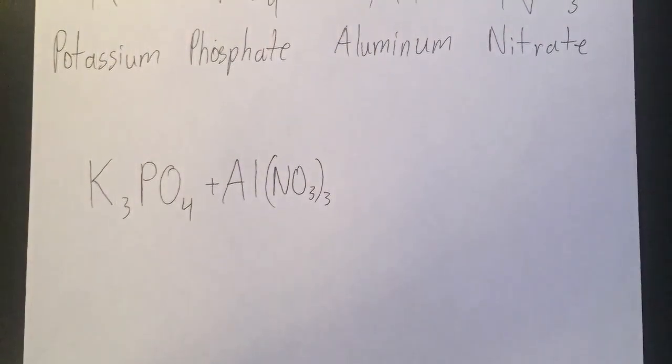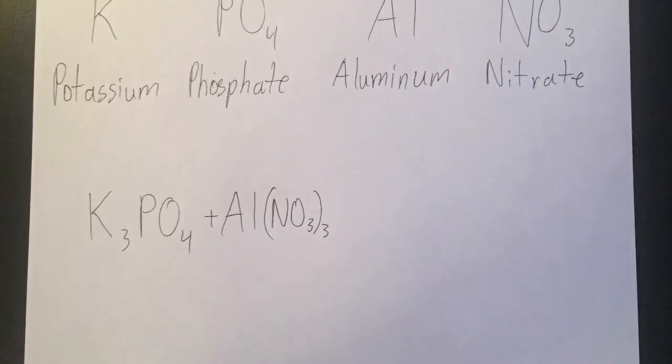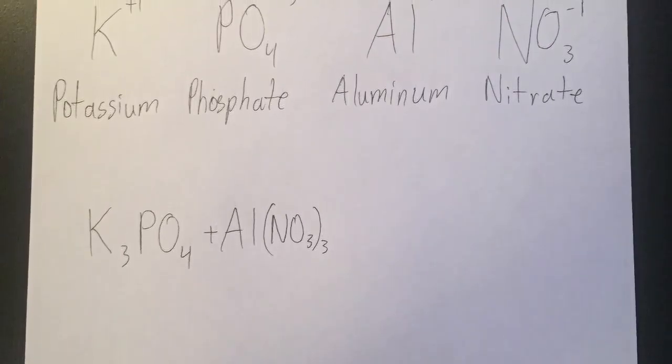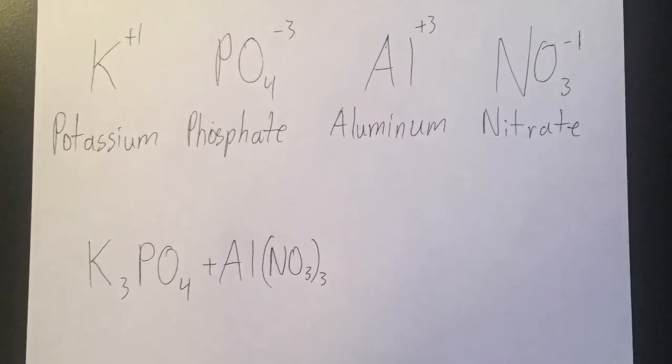Since potassium has a charge of plus one and phosphate has a charge of minus three, there need to be three potassiums in order to balance out with phosphate. The same applies to aluminum and nitrate.